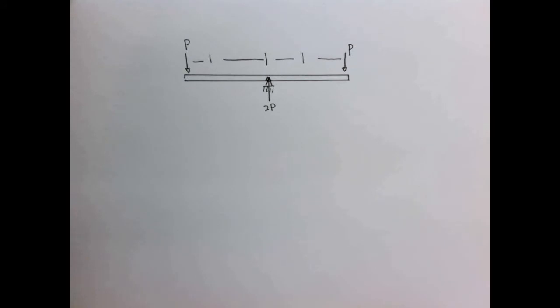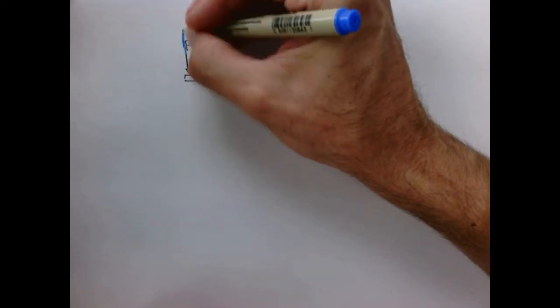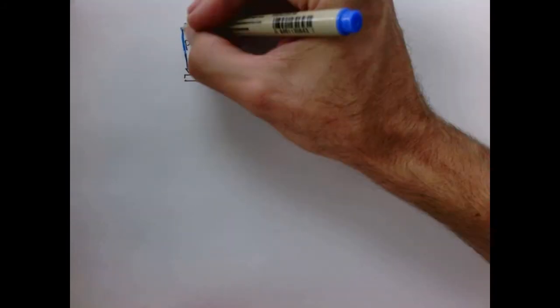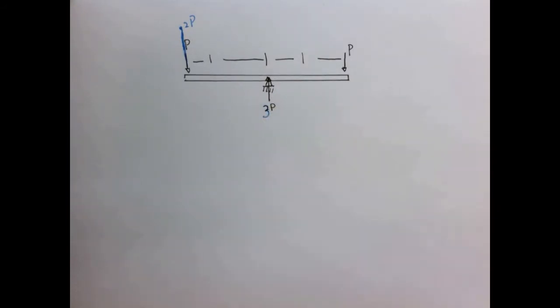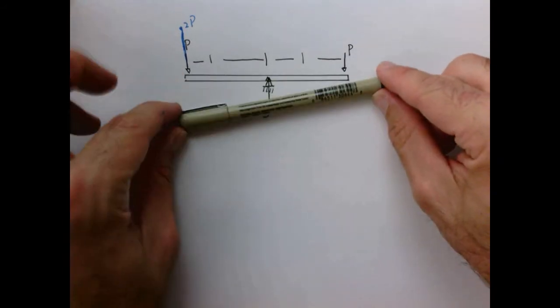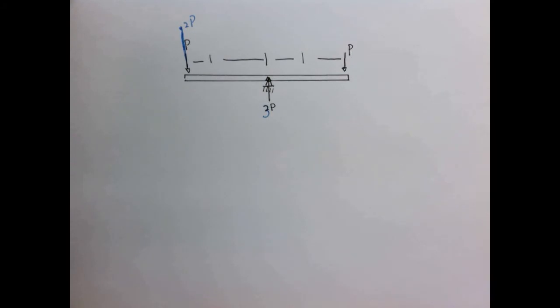However, what happens if I come along and add some extra weight here? So now this is 2P. Well, sum of the forces in the Y direction would change that to 3P, but now it should be pretty obvious that this thing is out of whack, because now I have more pushing down here, and so the teeter totter is going to tip in that direction.